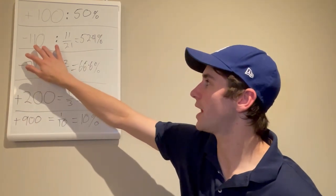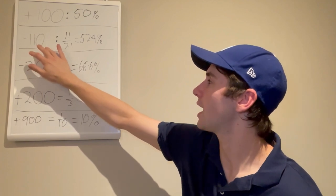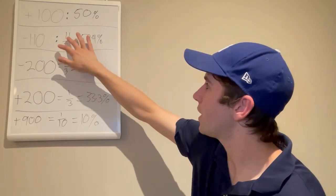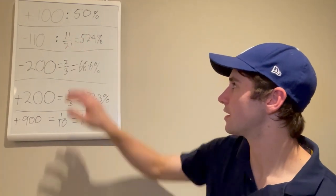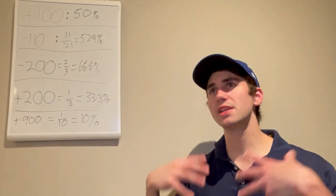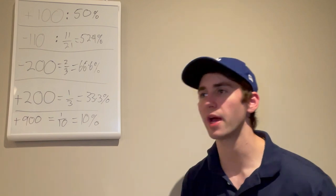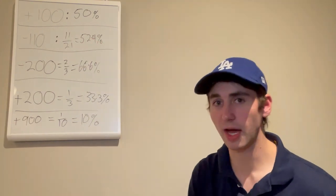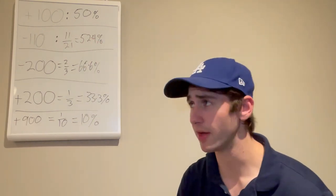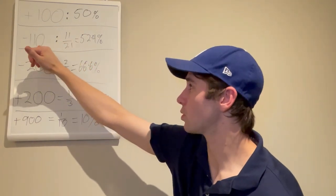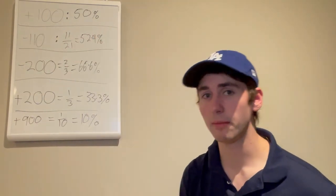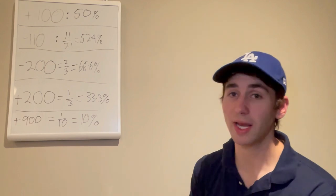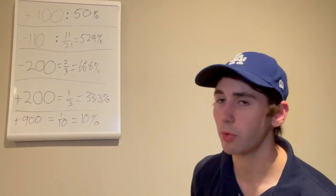The final example we'll talk about is minus 110 odds. Minus 110 odds — following the same formula as minus 200 — you have to win 11 out of 21 times to break even. That's 52.4% of the time. Minus 110 is very common in point spreads and totals. You have to win 52.4% of the time to cover the juice and just break even. If you are beating minus 110 odds more than 52.4% of the time, you are making money. If you are not, you're losing money and draining your edge to the house.